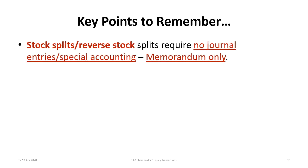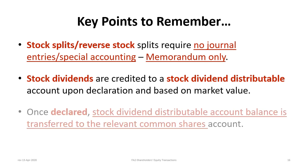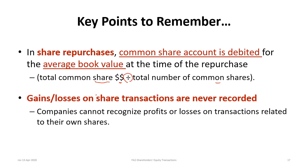Stock splits or reverse stock splits have no journal entries — memorandums only. Stock dividends, however, require accounting: debit retained earnings and credit a stock dividend distributable account (not payable) at the market value of the shares upon declaration. Once distributed, the stock dividend distributable account is transferred to the common shares account. For share repurchases, the common share account is debited for the average book value, calculated as total common share dollars divided by total number of common shares. Gains and losses on share transactions are never recorded.